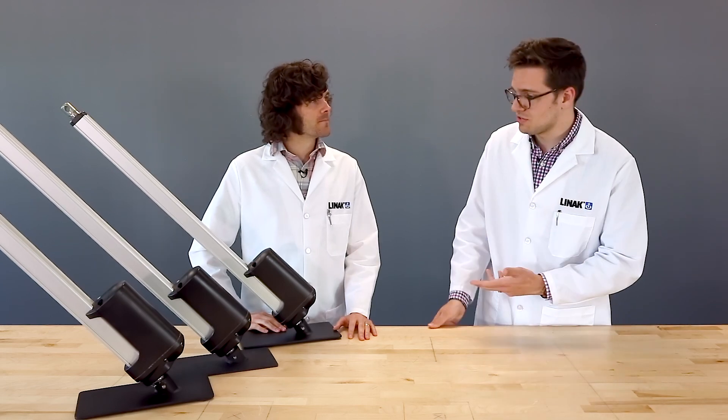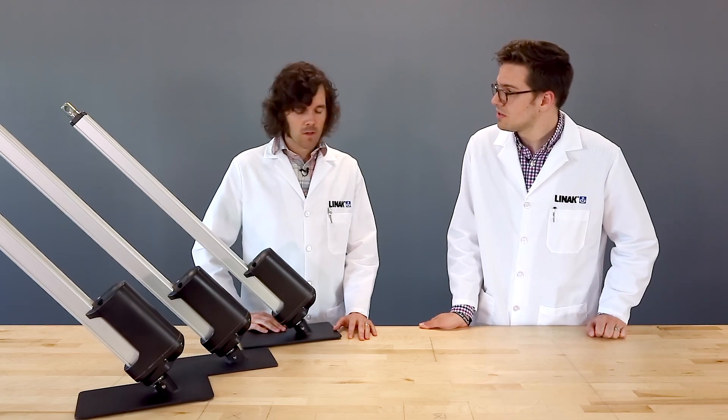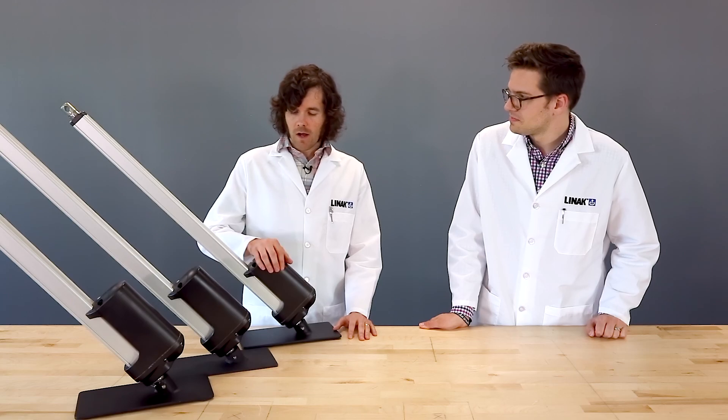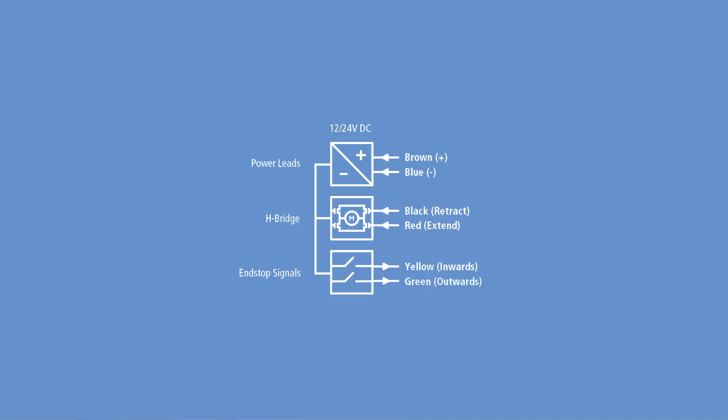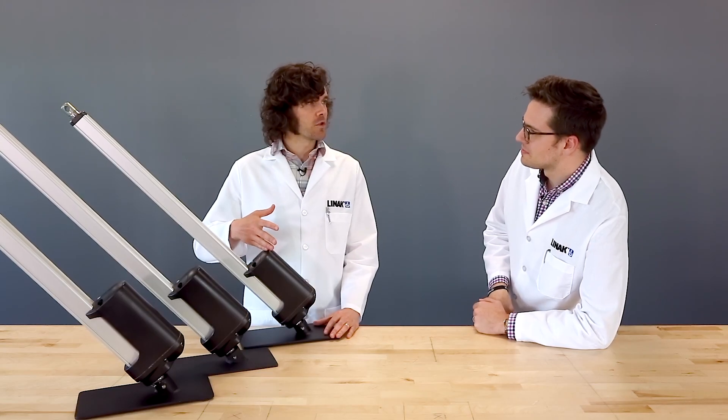So speaking of IC advanced, there's three different types of IC that Linac manufactures. The first one being IC basic, which incorporates the H bridge motor controller and it has in-stop signals. It's the most cost-effective version.